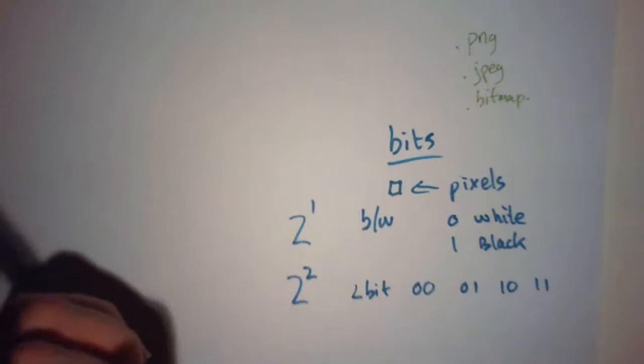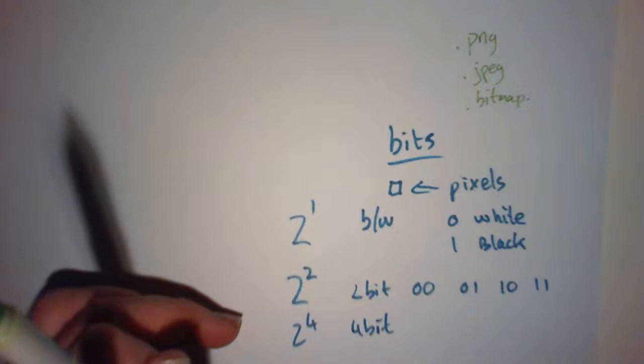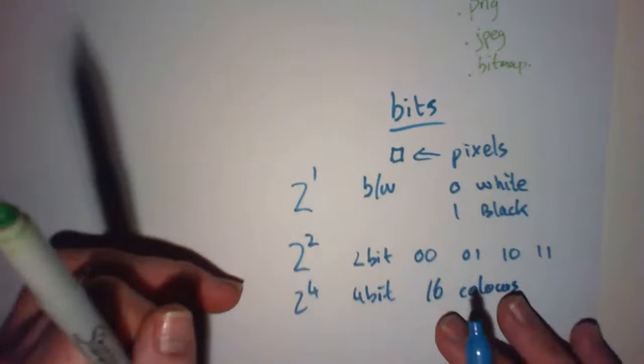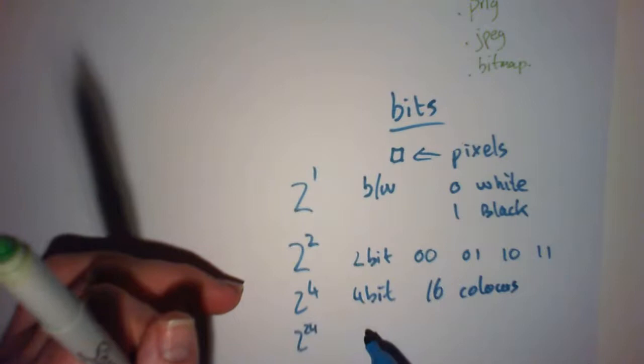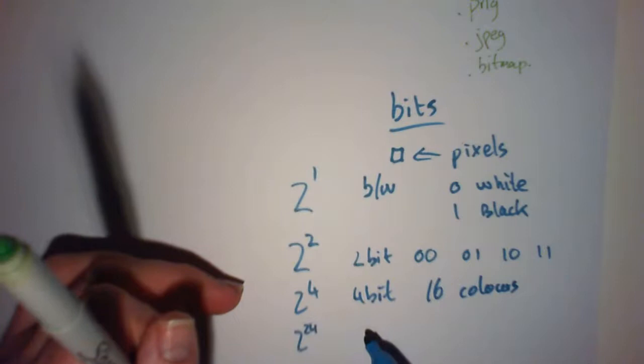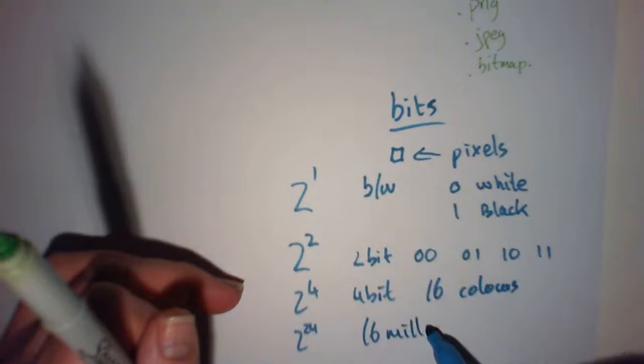If you expand it out, you can get greater ranges for greater amounts of bits. For example, four bit, you're going to get 16 different colors. You expand it out even further, 24 bit, you've got about 16 million-ish colors.